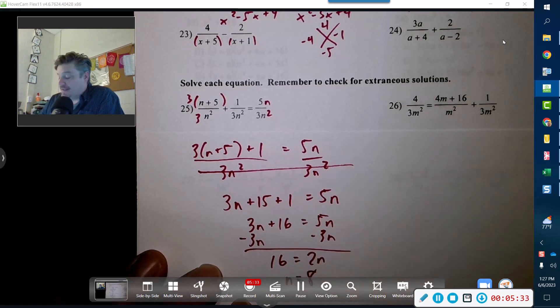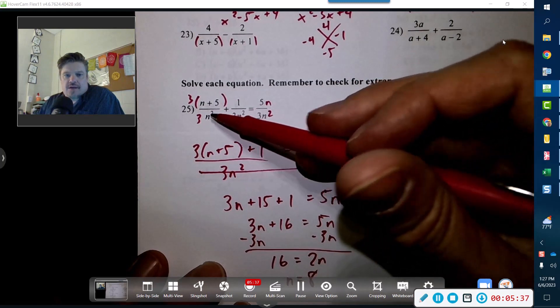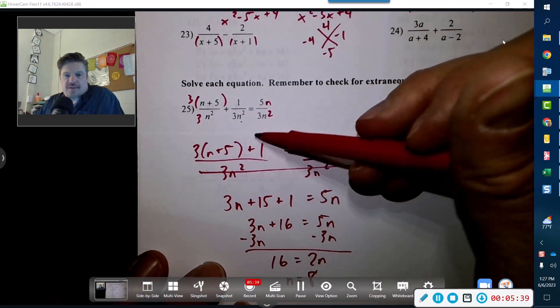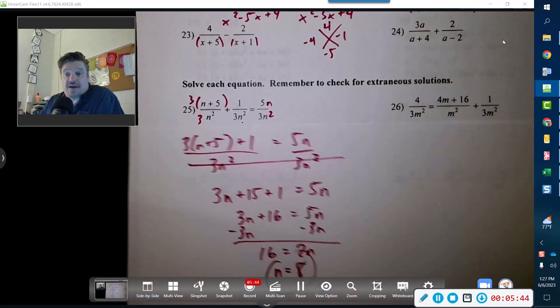To make sure it works, is 8 going to cause any problems here? Nope. 64, 64 times 3? Nope, we're good. So 8 checks out, that would be your final answer.